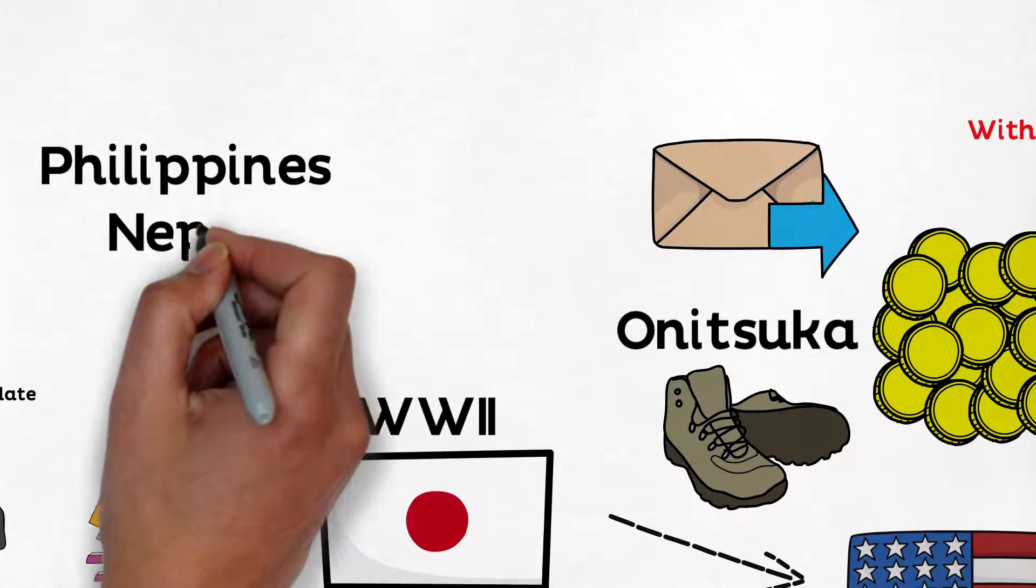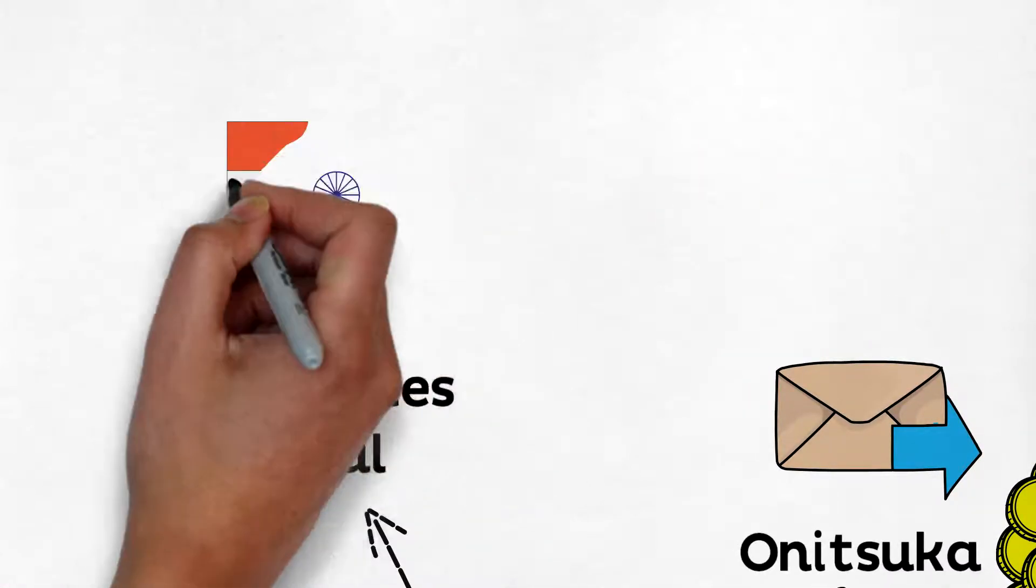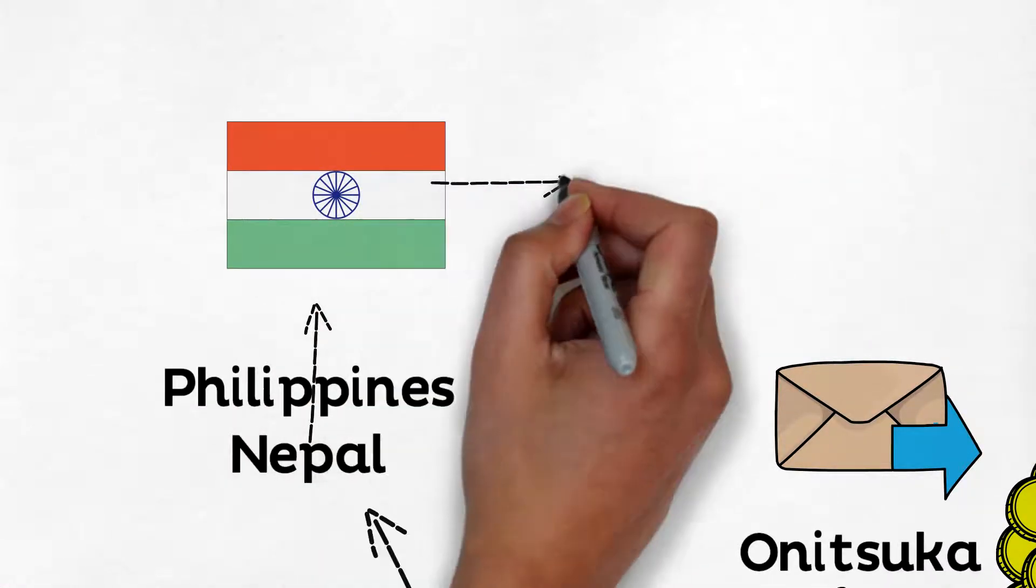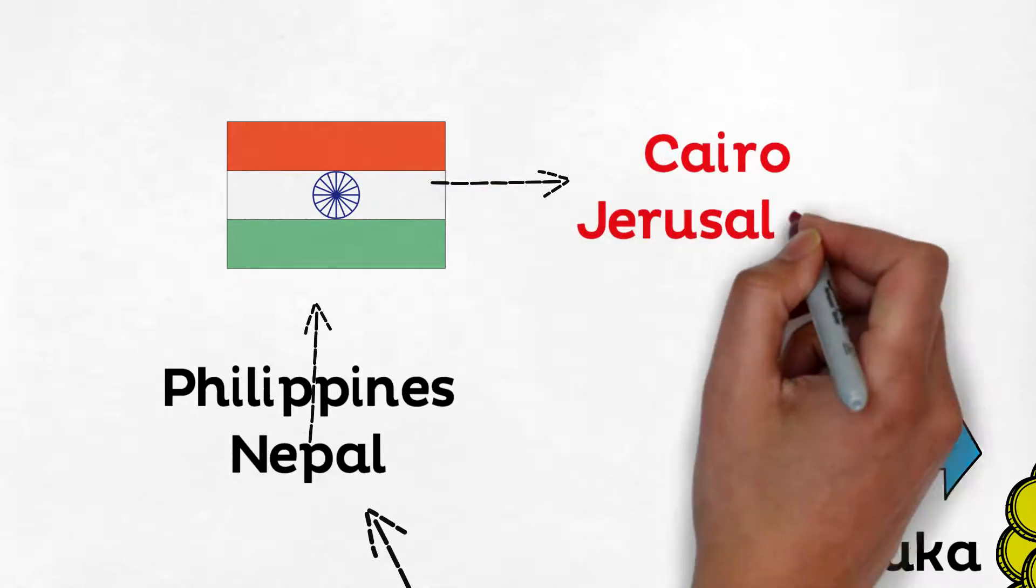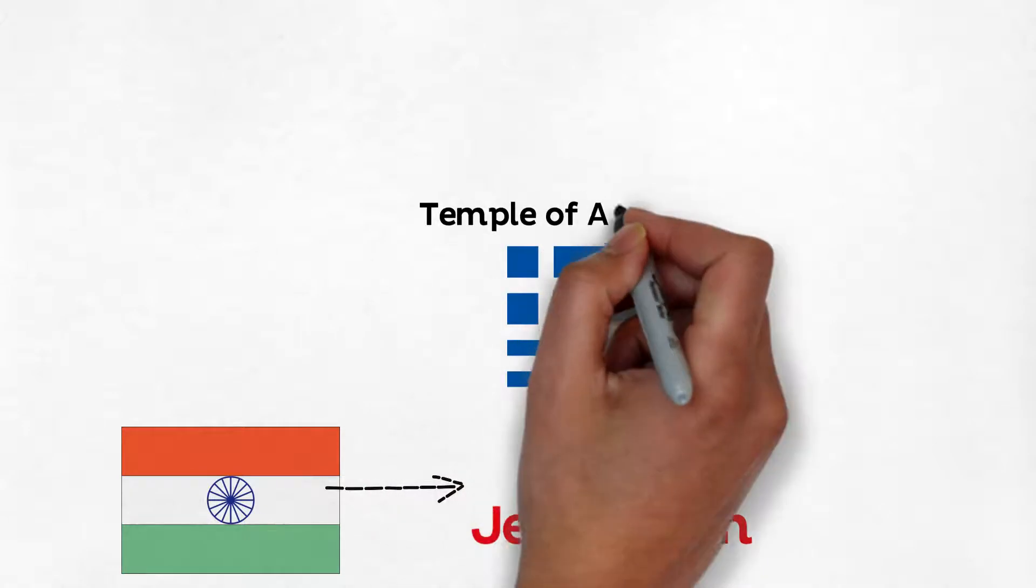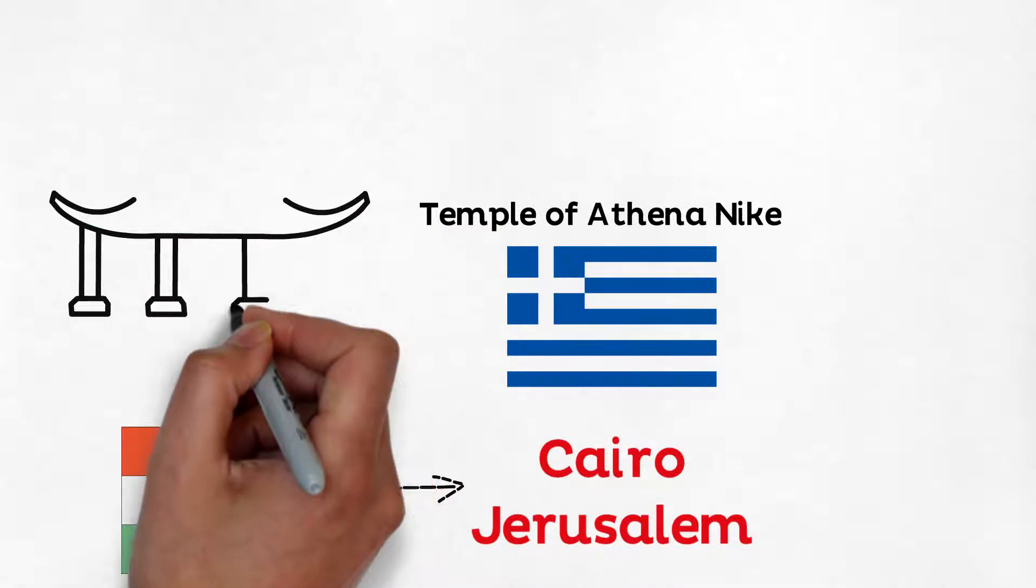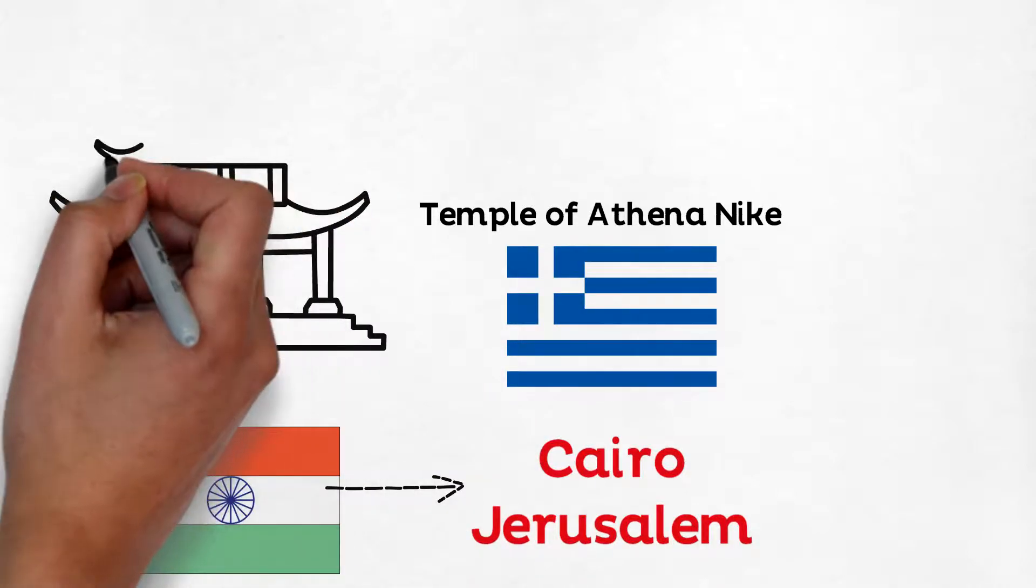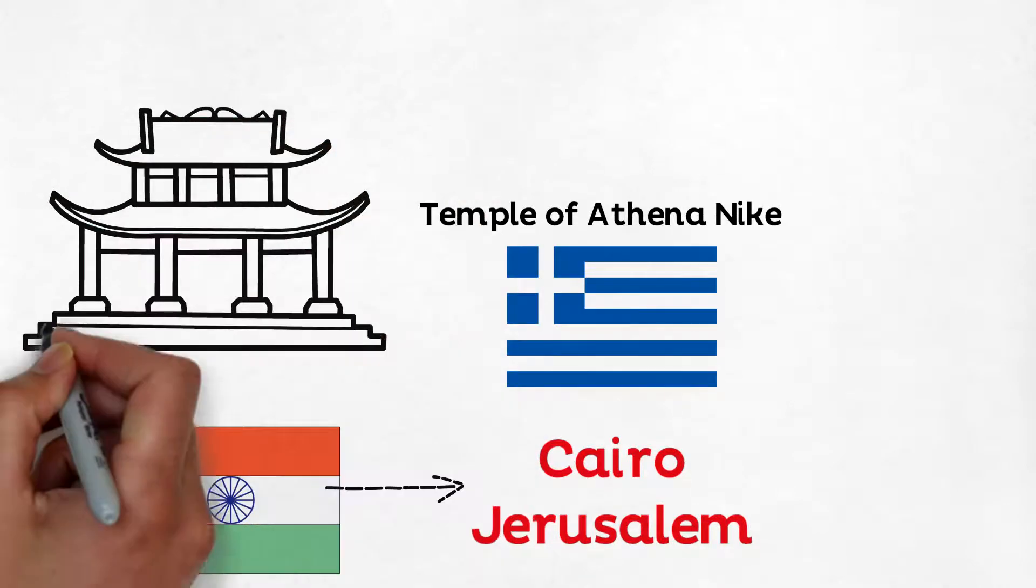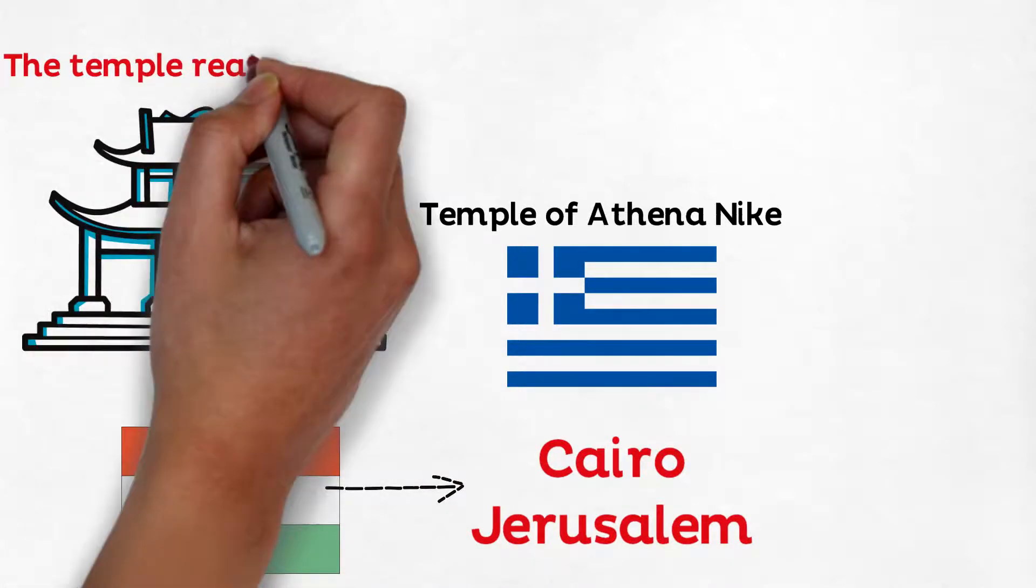He then left Japan to continue his journey on a world tour. He then visited Philippines, Nepal, India. In India, he read about the Hindu religion. He then visited Cairo, Jerusalem, Greece, and this is where he visited the temple of Athena called Nike. He stated, 24 years ago, per my guidebook, it housed a beautiful frieze of the goddess Athena, thought to be the bringer of Nike, or victory. The temple really intrigued him.